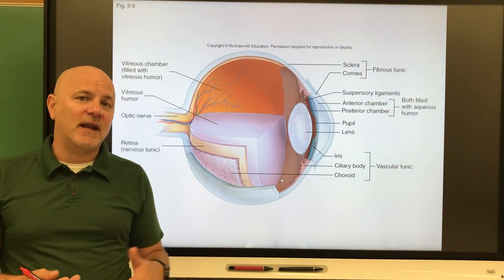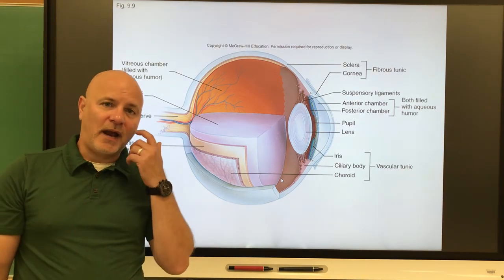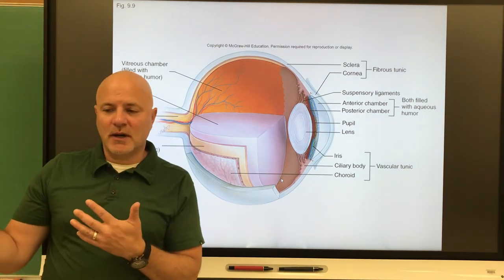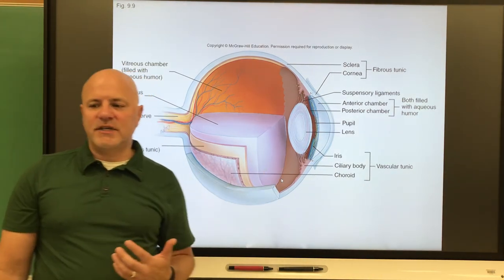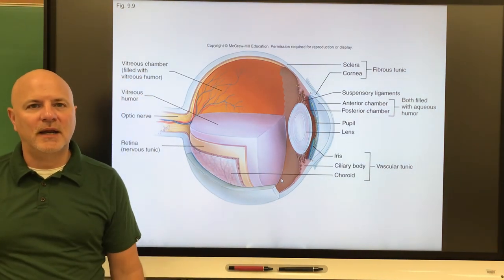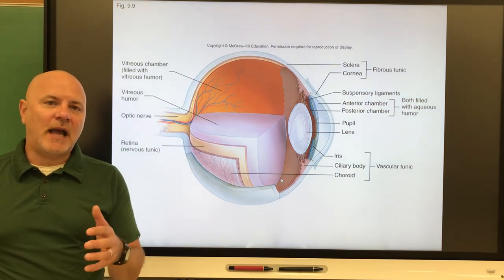The denser the iris tissue, the grayer that eye will look. I do want to point out something. Eye color, like skin color, like hair color, these are polygenic traits. Poly means many, genic means genes. Many genes control these traits. That's what we see with them.